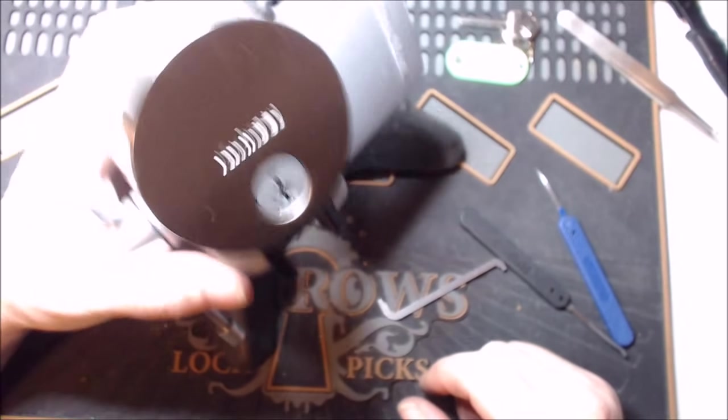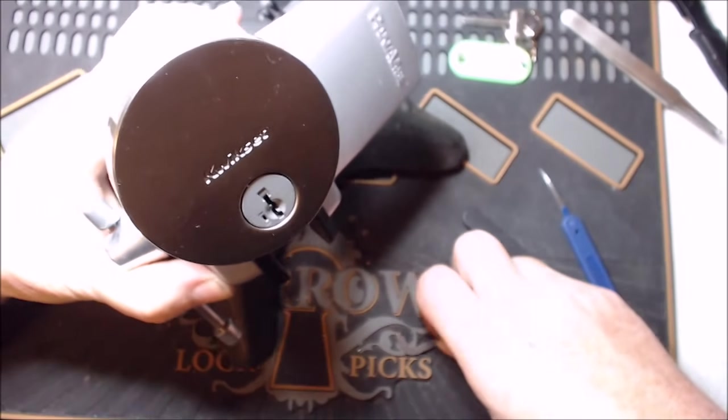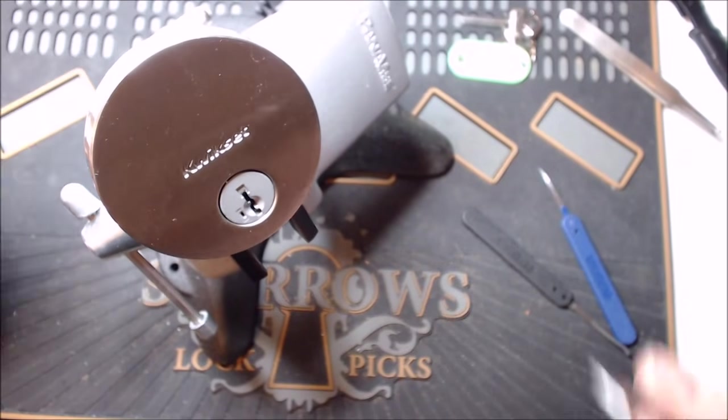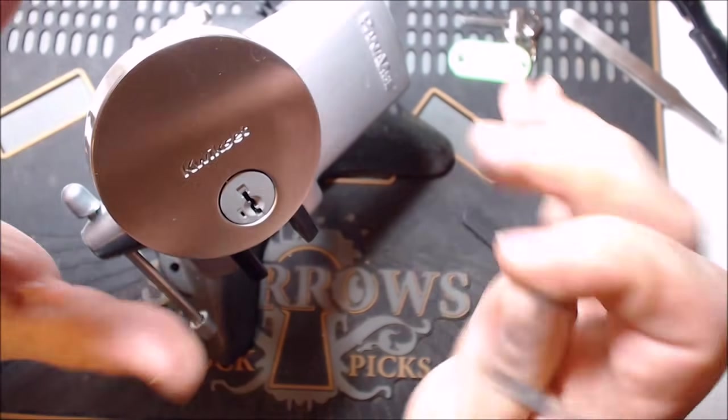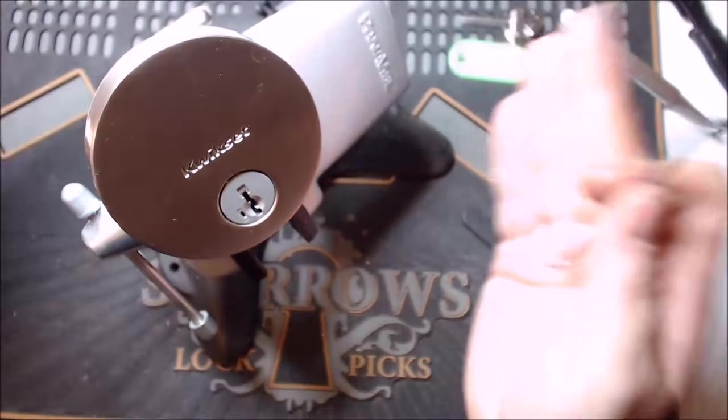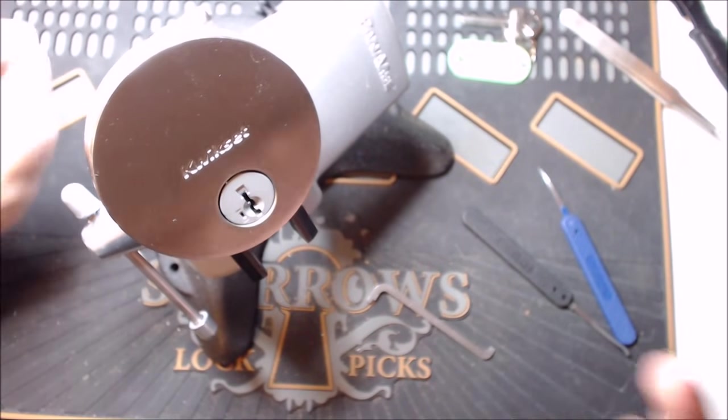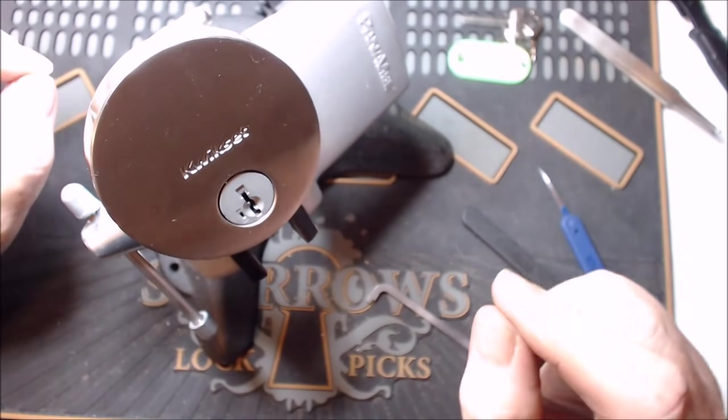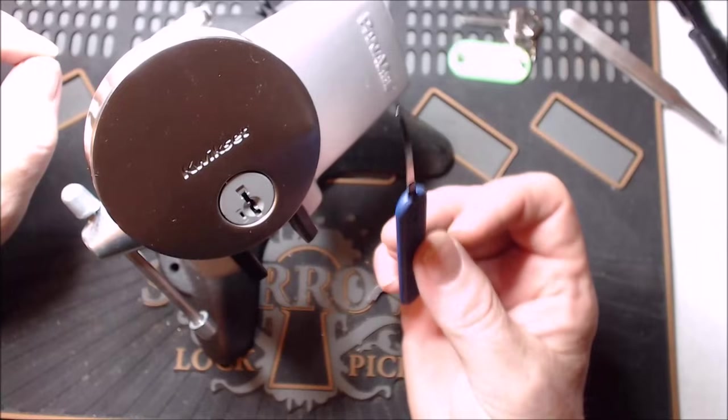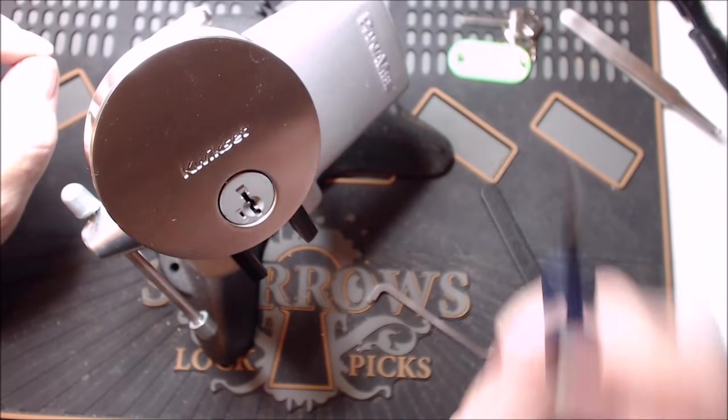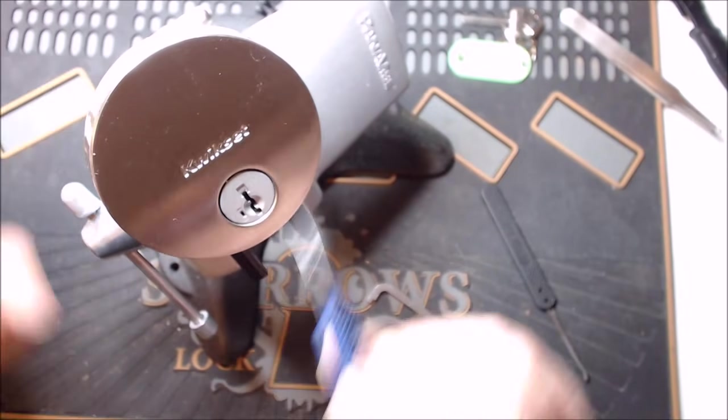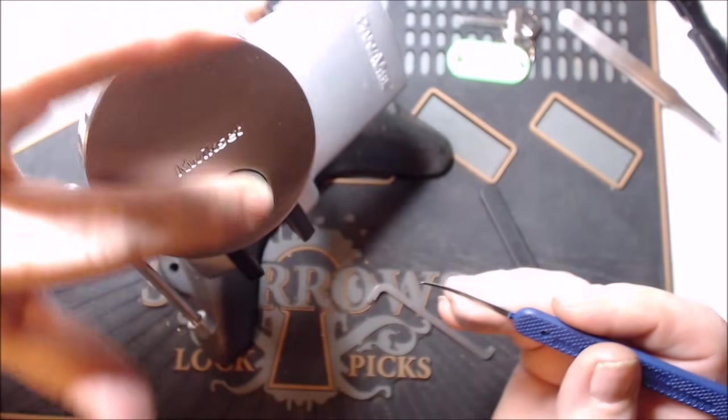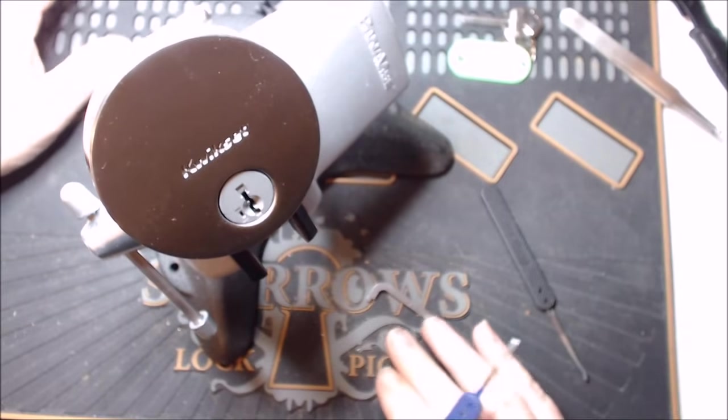Alright folks, we got a Quickset Gen 3 here. It's an uptown model and I'm going to pick this two different ways. I'll do a pick and a gut, but I'm actually going to pick it twice before I gut it because I want to show you the picking premise from outside of the housing. But in order for this to be an official pick of a Gen 3 for my Reddit brown belt, I need to pick it in its housing.